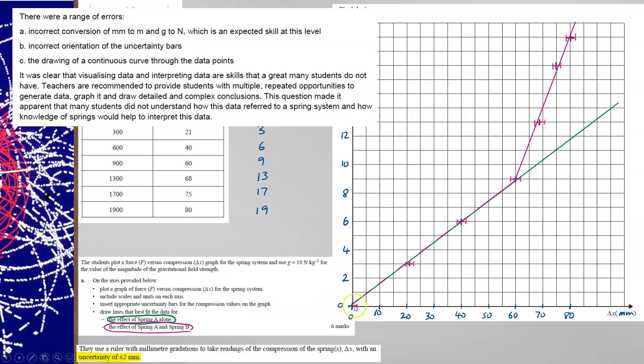Orientation of the uncertainty bars. They are horizontal because the uncertainty is given in millimetres, and millimetres is on the horizontal axis. And a continuous curve through the data points. A curve is not appropriate for this data because there's nothing that would suggest that the springs should be compressing in a curve. Definitely a linear region, Hooke's Law, and another linear region, a combined Hooke's Law.